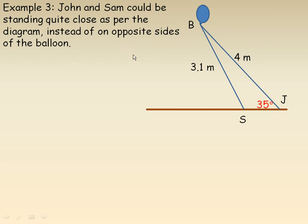Looking over on page 3, the triangle actually could be drawn differently. The 3.1 meter length that Sam is holding doesn't have to be coming out in this direction — it actually could be going in this direction, in which case John and Sam are actually quite a bit closer than 5.4 meters.